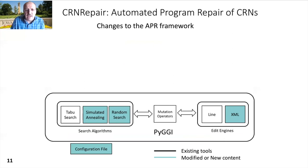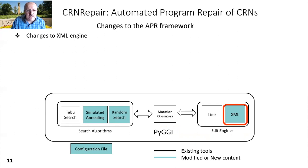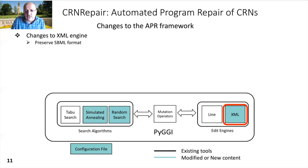Now let's talk about some details of the APR framework. There are many APR frameworks available. We chose Piggy because it supports XML and can easily be extended for any programming language. We needed some changes to the XML engine — for example, there are many tags in an SBML file, but we wanted to use only species and reactions for mutations. To avoid clear syntactical errors, we wanted to make sure that a reaction can only be replaced by another reaction. Moreover, during mutation operations we need to preserve SBML format — for example, when a species is added to or removed from a reactants list, the kinetic law in SBML needs to be updated. Or if all species from a reactants list are removed, then there is no need for the list of reactants tag.